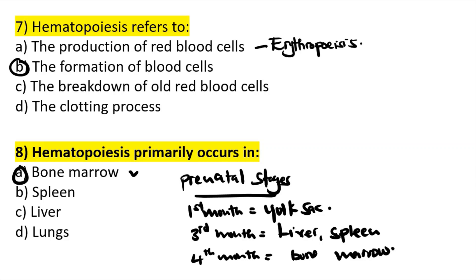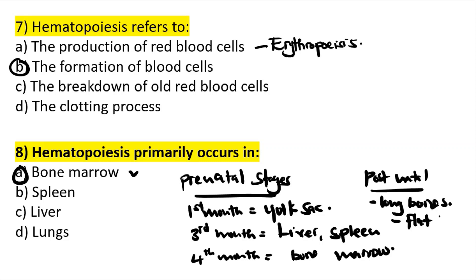In postnatal stages, after a child is born, mostly the long bones and flat bones are responsible for making blood cells. Long bones like the tibia and femur, and flat bones like the rib, the sternum, and the vertebra.